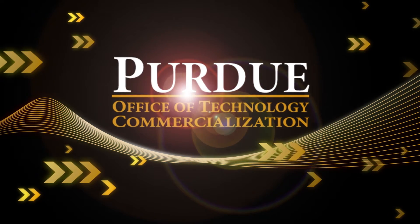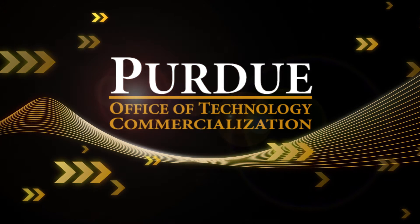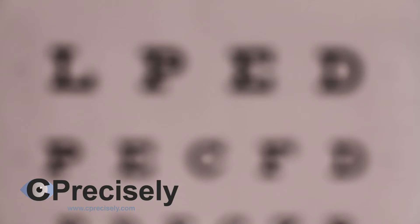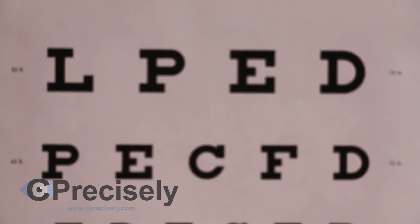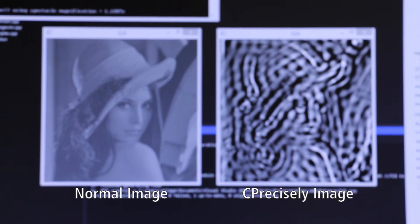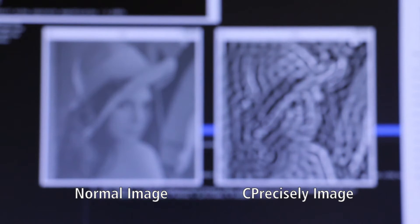Purdue University is an international leader in technology transfer and start-up creation. One of those start-ups is See Precisely, which is commercializing a Purdue innovation that could allow people to read electronic books with increased visual sharpness on tablets, smartphones or laptops without corrective eyewear.